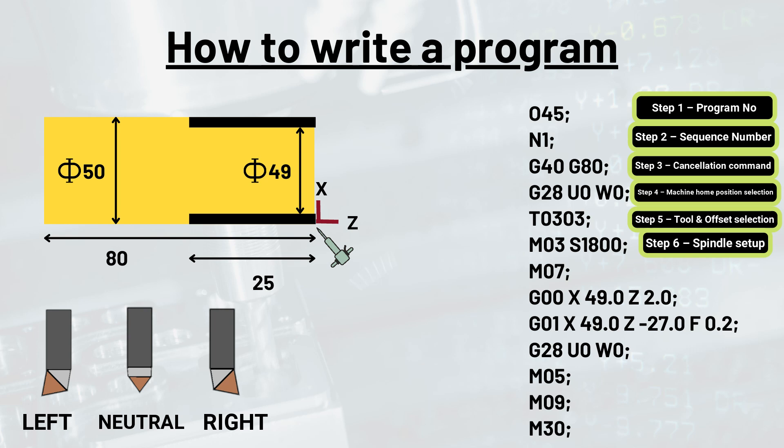However, in case of a neutral hand tool, either M03 or M04 can be used. As we know that M03 is for clockwise rotation of spindle and M04 is for counterclockwise rotation.